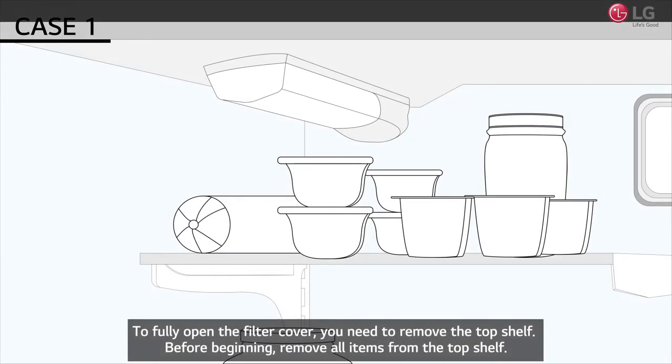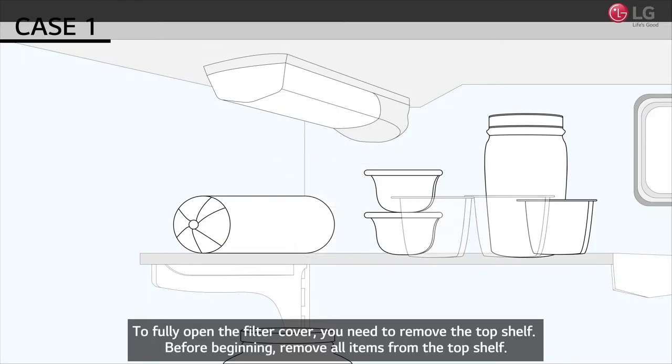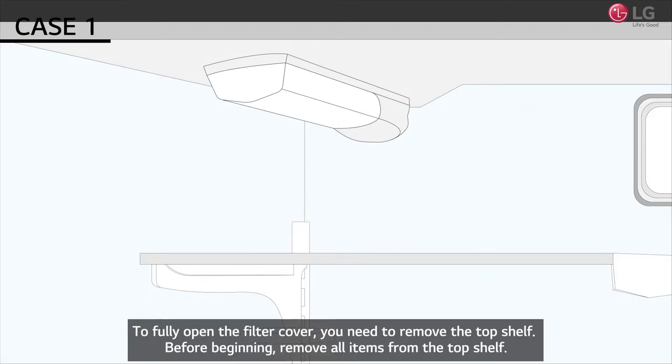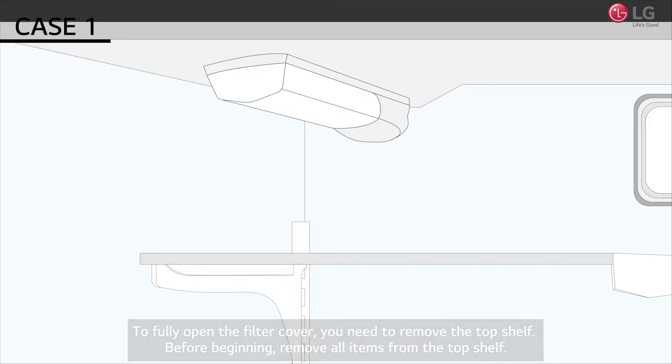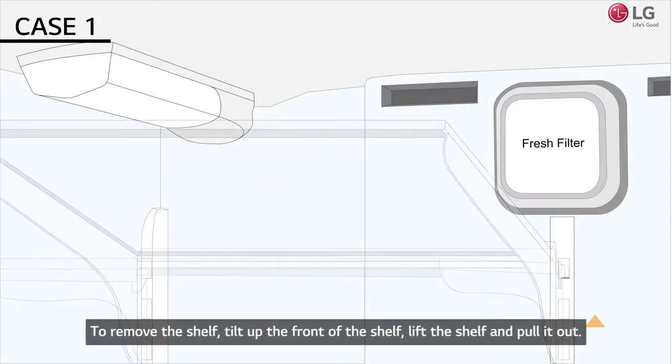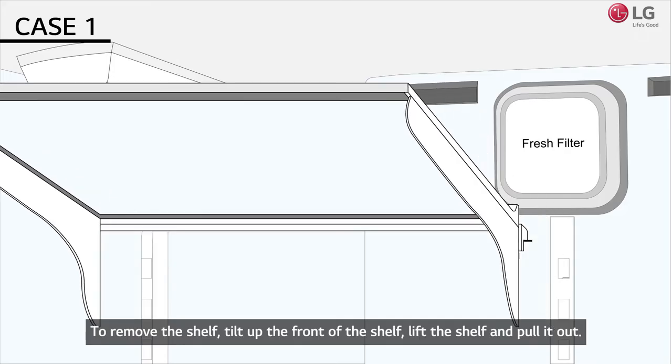To fully open the filter cover, you need to remove the top shelf. Before beginning, remove all items from the top shelf. To remove the shelf, tilt up the front of the shelf, lift the shelf and pull it out.